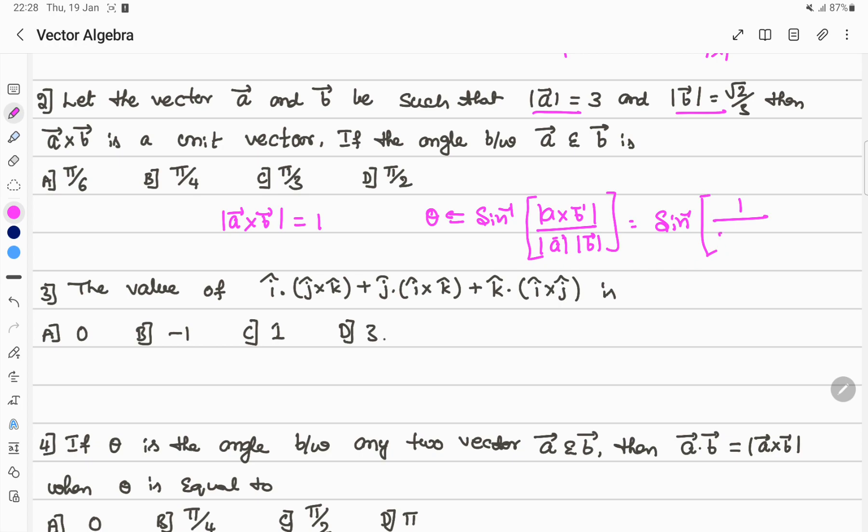Magnitude of a equals 3, magnitude of b is root 2 by 3. So here 3 gets cancelled. 1 by root 2 means this is pi by 4.